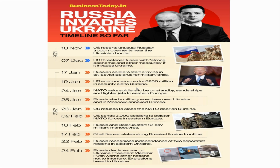Looking at the timeline of the war between Russia and Ukraine: in November 2021, the US reported unusual Russian troop movements near the Ukrainian border. In December, the US threatened Russia with strong economic measures if it invaded Ukraine. In January 2022, Russian soldiers arrived in Belarus; the US announced an extra $200 million in security aid to Ukraine and sent 3,000 soldiers to bolster NATO forces, though this wasn't enough. In February, the war between Ukraine and Russia began.